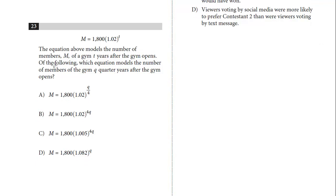The equation above models the number of members m of a gym two years after the gym opens. Of the following, which equation models the number of members of the gym q quarters after the gym opens? You should recognize this is exponential growth. 1,800 is the original number of members. We know that it's one plus the rate, and so the rate is two percent and it's annually because t is the number of years, and so we have to find the formula but we've got to convert it to quarters.